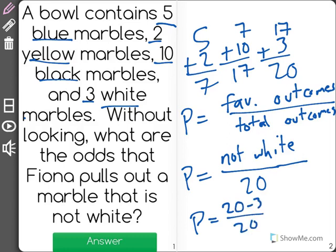So, 20 take away 3 is equal to 17 over 20. This is the fractional probability that Fiona pulls out a marble that is not white.